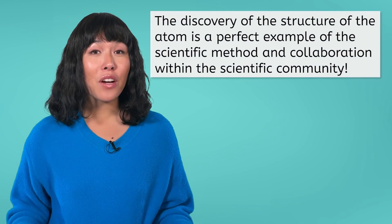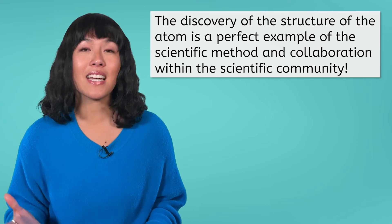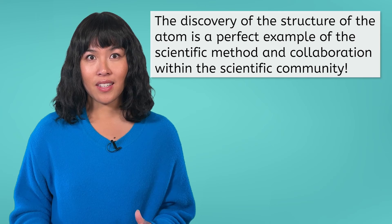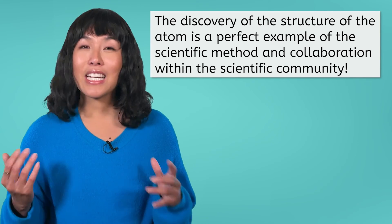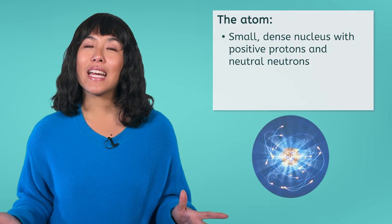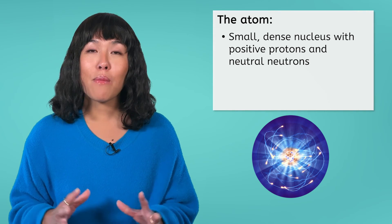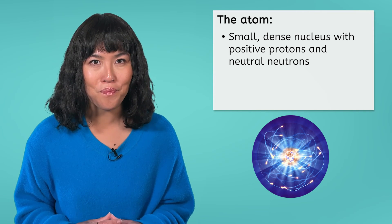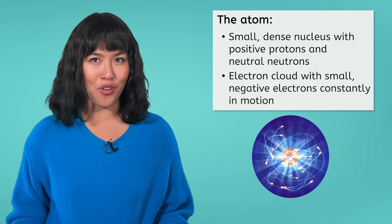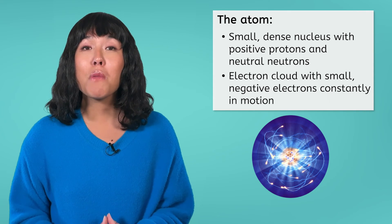Before we end our lesson today, let's spend a moment reviewing what we have learned. The discovery of the structure of the atom is a perfect example of the scientific process. Over hundreds of years, scientists tested theories, analyzed results, and shared their findings with their peers. They also worked to build on each other's research. Getting to our current model of the atom was a work of true collaboration within the scientific community. Our current model states that the nucleus is made of positively charged protons and neutral neutrons, and is small and dense. Remember, when something is dense, that means it has a large mass and a small volume. Surrounding the nucleus are negatively charged electrons. These electrons are constantly in motion, with lots of energy, and move around the nucleus in electron clouds, which are mostly empty space.